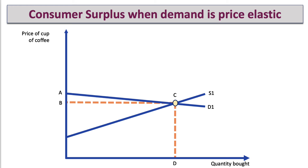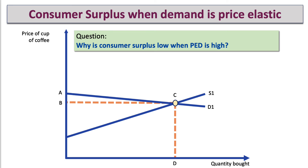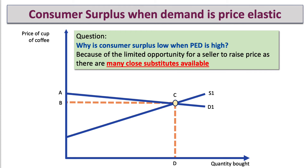Consider for example the market for takeaway coffee. Here's a market where I'm going to assume the demand is fairly price elastic, and you can see how I've drawn the demand curve D1. The equilibrium in the market is at price B and quantity D. Often in this kind of market there's no limited opportunity for the seller to raise their price because there are many close substitutes available. If you raise the price of your coffee, someone else will offer a slightly lower price, so people will switch towards the relatively cheaper product.